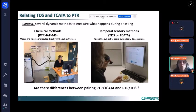The context of my presentation is that we have several dynamic methods to measure what happens during a tasting. We have chemical methods such as PTR-MS, which consists in measuring volatile molecules directly in the subject's nose during testing, and we also have sensory methods which can be temporal such as TDS or TCATA. These methods consist in asking the subject to score dynamically their sensations. So the question of my presentation is: are there differences between pairing PTR and TCATA and PTR and TDS, so one chemical method and two sensory methods?